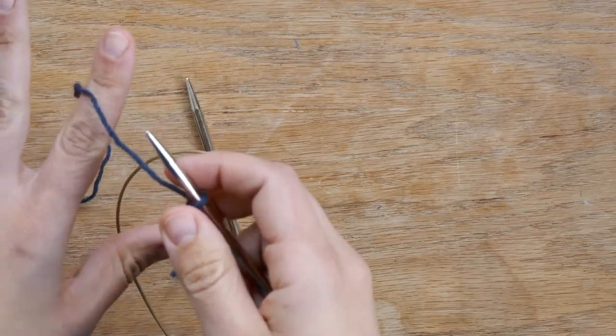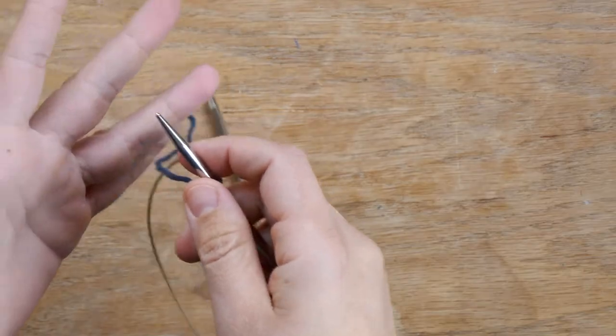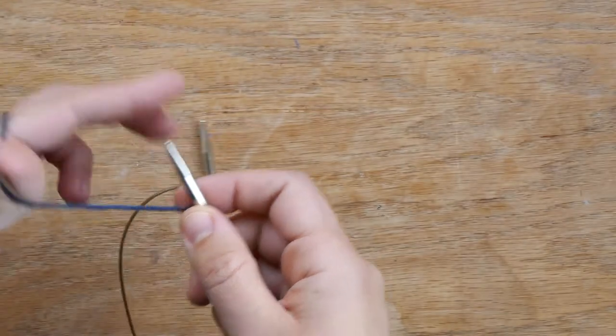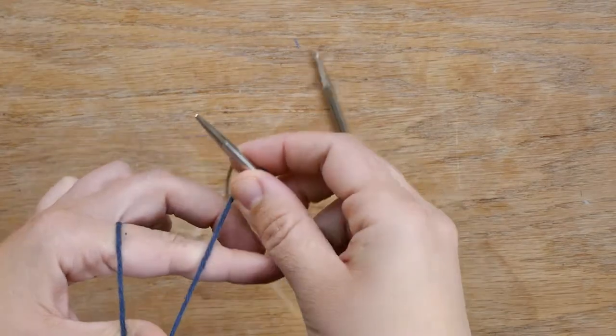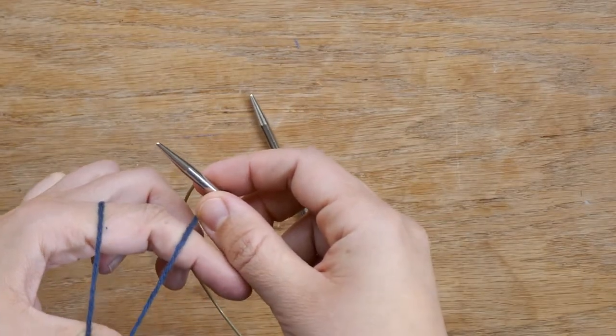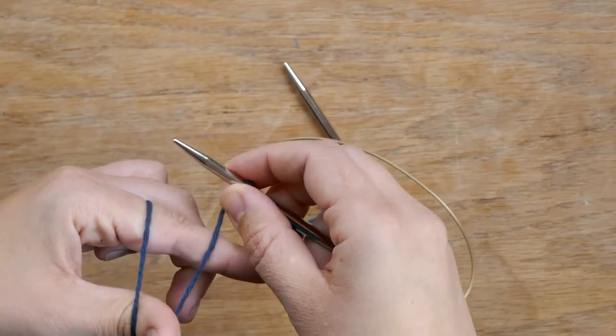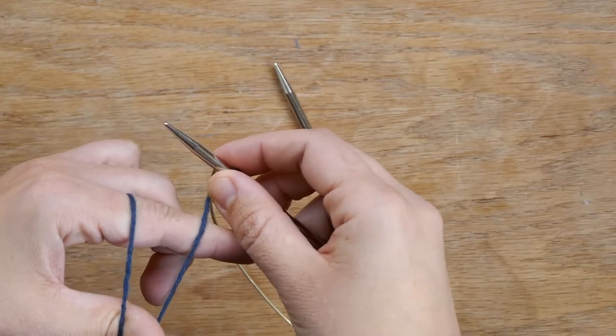So the next thing you're going to do is hold your thread a particular way. So I always start here, go over your forefinger, around your thumb, and back over your forefinger. So again, that's over your forefinger, around your thumb, and rest the yarn over your forefinger again.